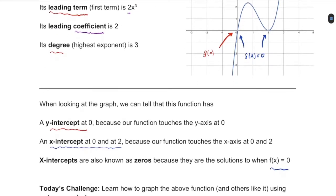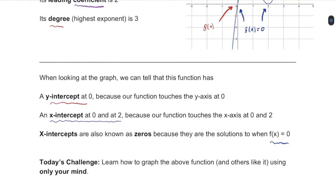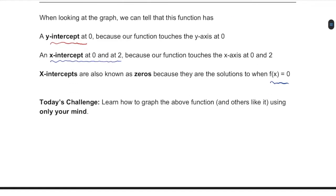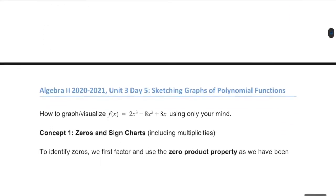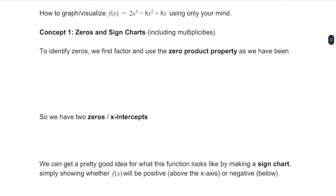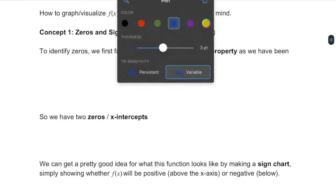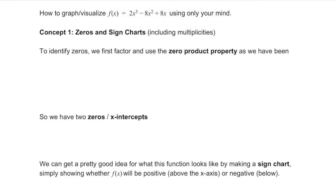Today's challenge is to learn to graph this function and others like it using just your brain power. We're going to start by creating a sign chart through traditional factoring. So let's take our function f of x, which equals 2x cubed minus 8x squared plus 8x, and find when it equals zero.